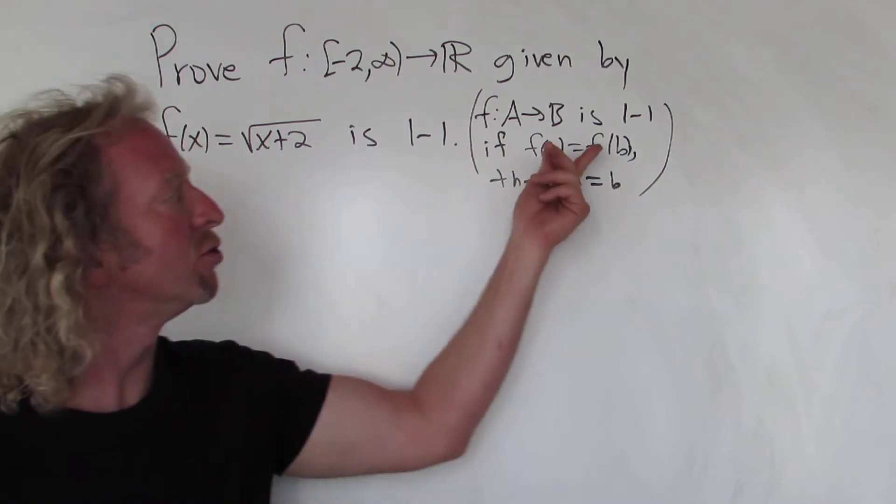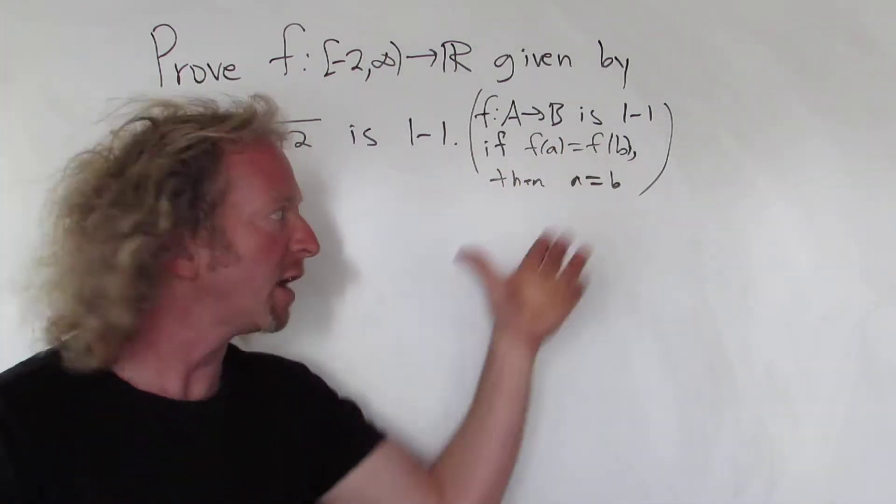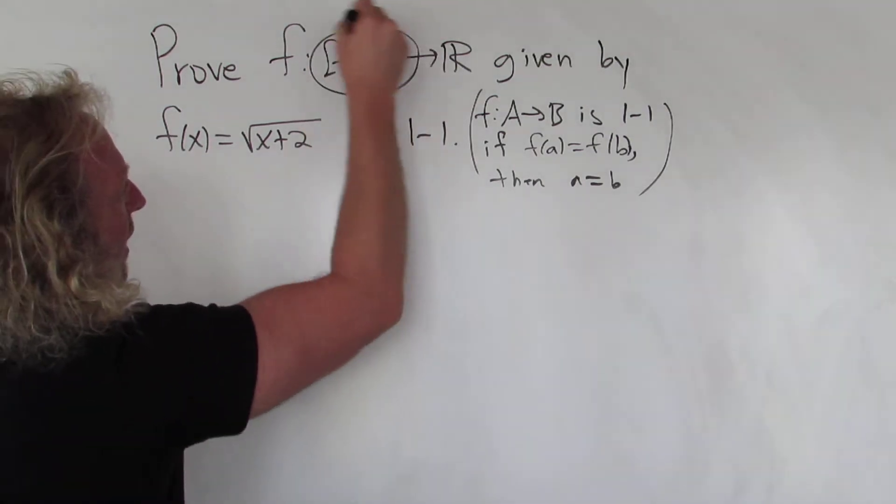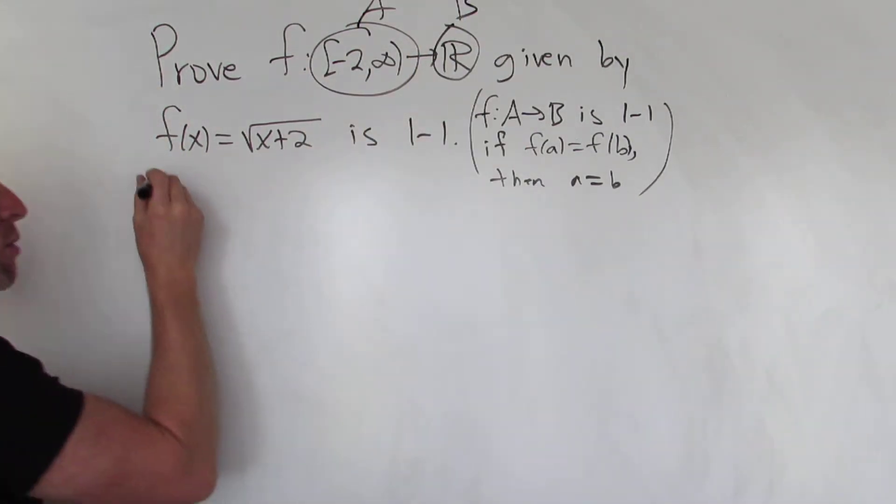So when we do this problem we'll start by assuming f(a) is equal to f(b), and then we'll just show a is equal to b. So this is our big A and this is our big B in this problem. Proof.